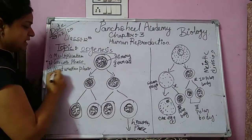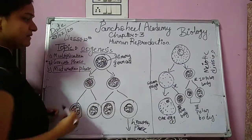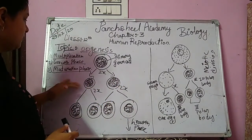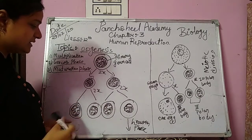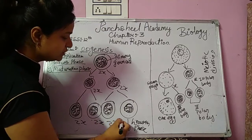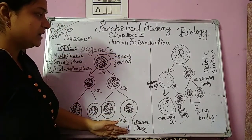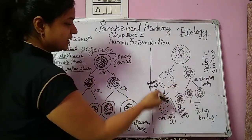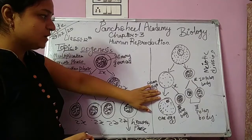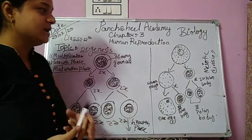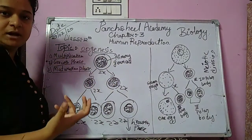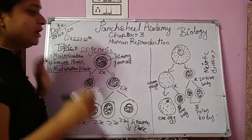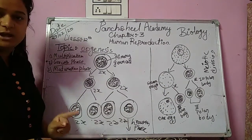Which three phases? Multiplication phase, growth phase, and maturation phase. Just like in spermatogenesis, the primary germ cell undergoes cell division in the multiplication phase — cells increase in number. One cell then enters the growth phase, where the egg undergoes complete growth, and primary and secondary oocytes are formed. After growth, under the maturation phase, one cell develops into the complete egg.